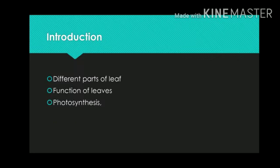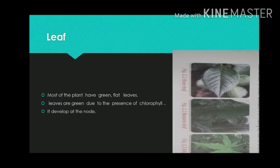Students, our today's topic is The Plant World. In this chapter, we will study about the importance of plants and different parts of leaf, function of leaves and photosynthesis. We are going to talk about the very important structure of the plant which is the leaf. This is the part of the plant which actually makes the food by the process of photosynthesis. Let us learn more about the leaf.